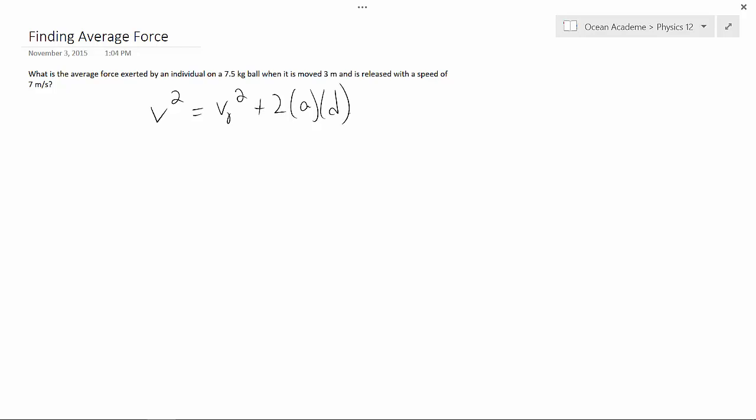So our final velocity was 7, so that's 7 squared equals our initial velocity is 0, plus 2 times a, which we're trying to find, and distance, which was 3 meters.